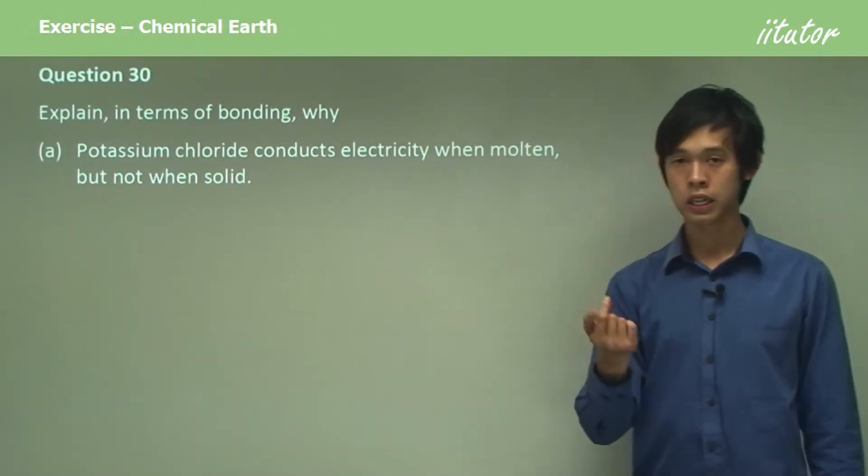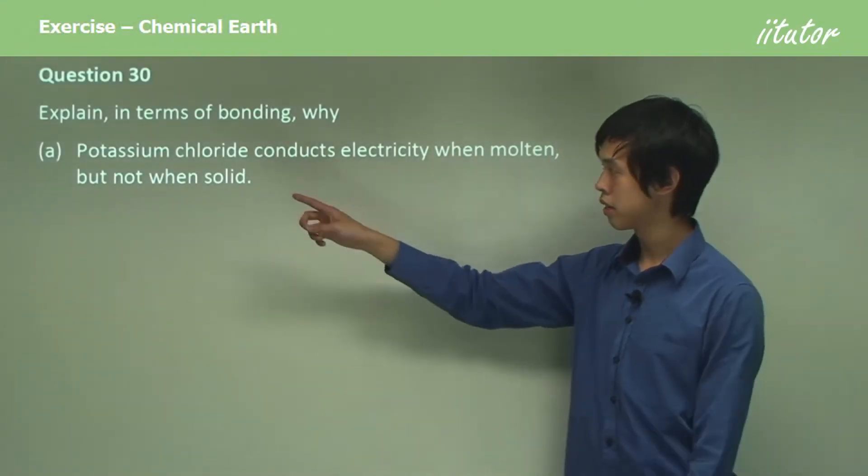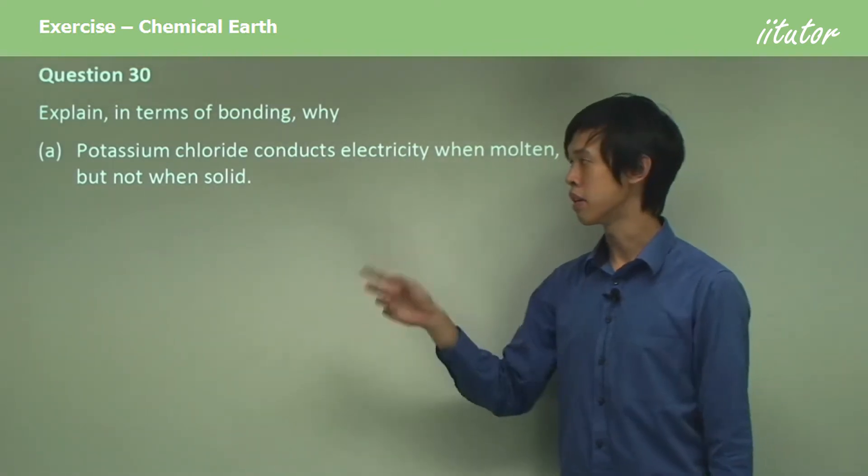Question 30. Explain in terms of bonding why potassium chloride conducts electricity when molten but not when solid.